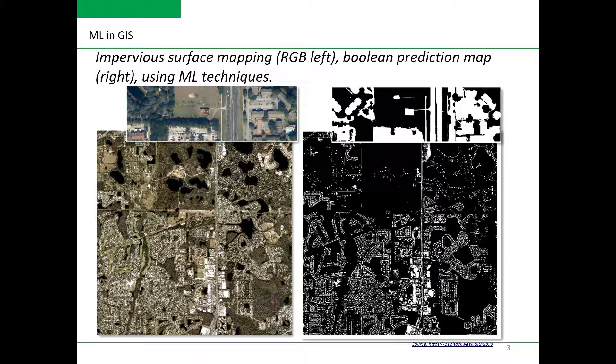At the same time, on this slide you can see an example of application of machine learning in GIS, namely here in remote sensing. In this example, there is an impervious surface map on the right that was derived from very high-resolution images on the left using machine learning techniques. In this specific case, the random forest classification was applied.